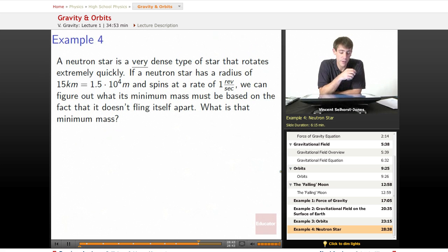A neutron star is a very dense type of star that rotates extremely quickly. If a neutron star has a radius of 15 kilometers, which is 1.5 times 10 to the fourth meters, because we've got to have things in standard units, and it spins at a rate of one revolution per second, we can figure out what its minimum mass must be based on the fact that it doesn't fling itself apart. What is that minimum mass?